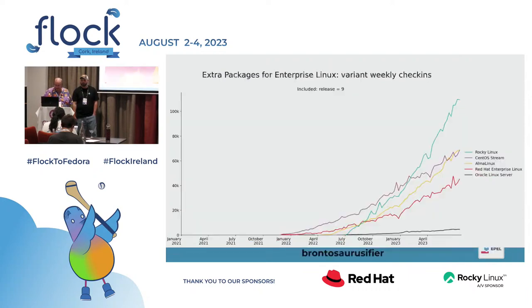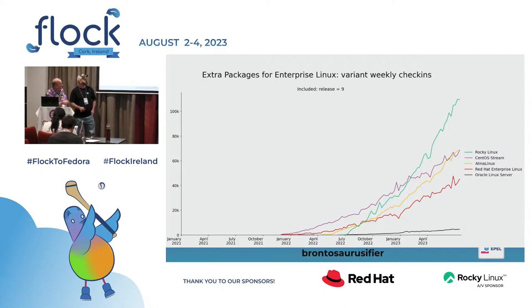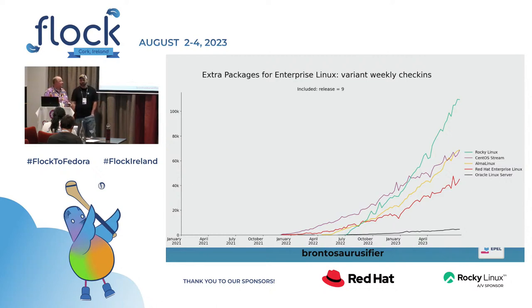Here come the more interesting things. Last time we showed these, we did not put names here and people were sad, so I'm putting names here. This is RHEL 9. Notice Rocky's in the lead, but it's at 100K — it's not really that big of a lead. CentOS Stream and Alma are basically tied, fighting there for second. Then RHEL, and there's Oracle. But this is 9 — 9, we sort of expect that, it's still growing. RHEL is going to grow because a lot of people don't really deploy RHEL until 9.3 or 9.4.